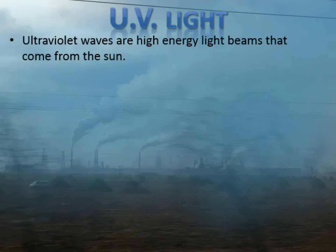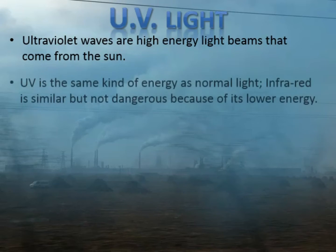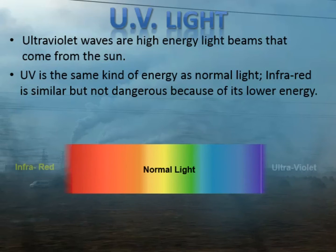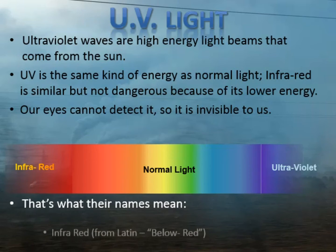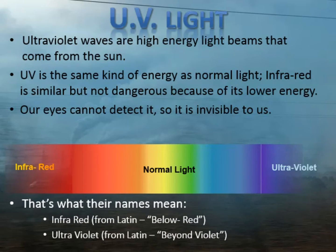UV light is blocked by ozone, and UV light is high energy light coming from the sun. It's the same kind of energy as normal light — just electromagnetic energy — but our eyes cannot detect it; we have not evolved to detect those frequencies so they are invisible to us. Infrared is similar but lower energy, so it is not dangerous in the same way, but both are invisible forms of light just outside the range we can detect. 'Infra' from Latin means below, and 'ultra' also from Latin means beyond — that is how the names have come to be.